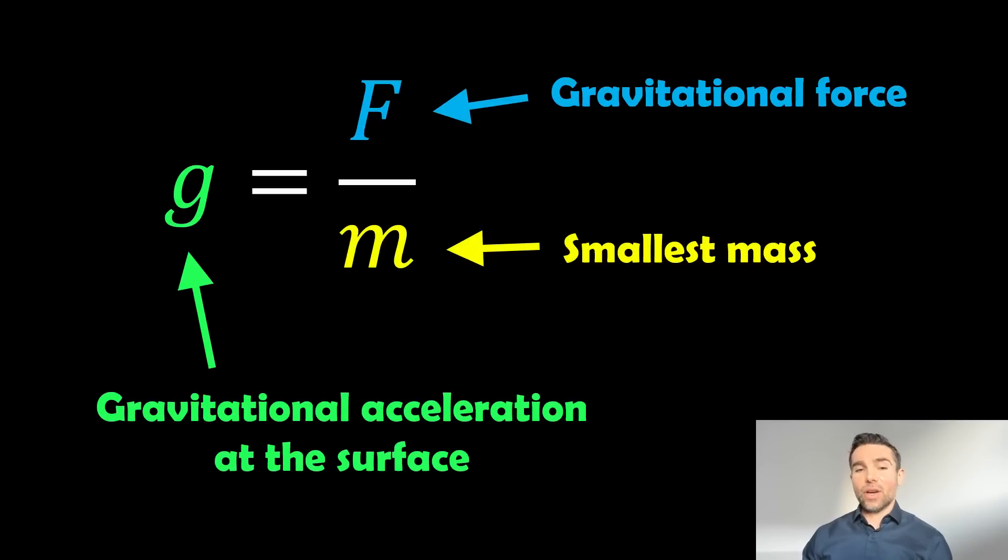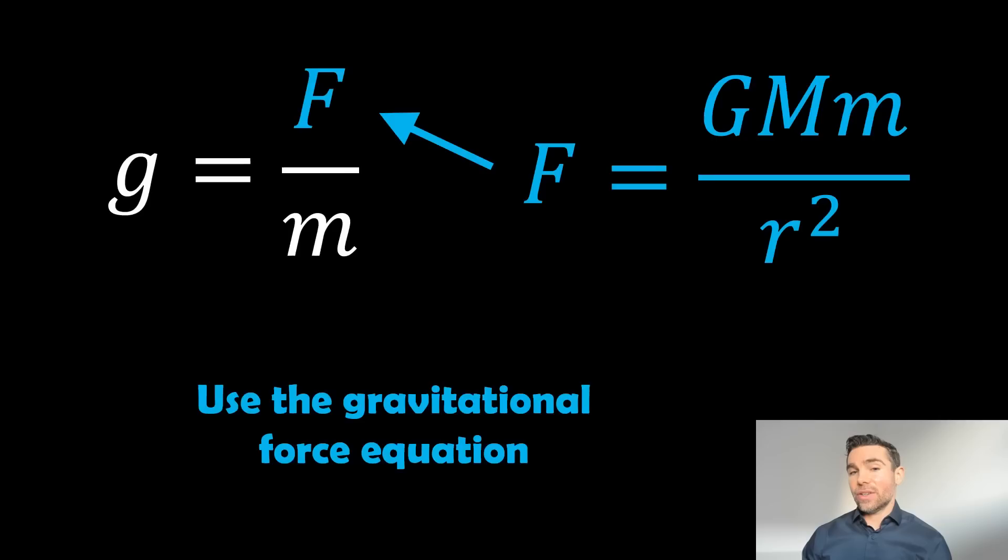So to get the surface gravity, we can use this equation here. So g on the left hand side, that's our gravitational acceleration at the surface. We've got the gravitational force, which we just saw on the right hand side at the top, and that's divided by the mass of the smallest object. Now we already had an equation for F, the gravitational force, so we can actually go in and put that into our surface gravity equation.